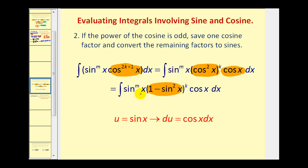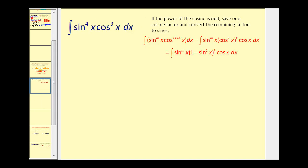Once everything is in terms of sine except for that one extra factor of cosine, we let u equal sine x. This gives u to the power of m times (1 − u²) to the power of k, and du equals cosine x dx, so all of that becomes du. In our example, we have an odd power of cosine, so we save one factor of cosine — this becomes cosine squared x times cosine x dx. We replace cosine squared x with one minus sine squared x, and deal with the extra cosine factor in the next step.